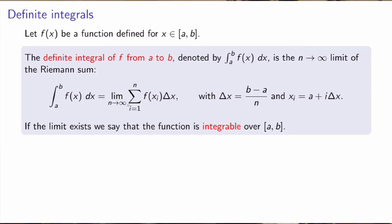More precisely, it is the limit as n goes to infinity of the summation from i running from 1 to n of f of xi, where xi is the right endpoint of the rectangles, times delta x, where delta x is the width of the rectangles. If this limit exists — because it could happen that it does not — then we say the function is integrable over this interval. Every continuous function over a to b is integrable, and in fact it does not need to be continuous as long as it only has jump discontinuities over the interval.